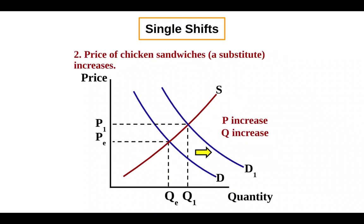The second example I'm going to give here is the price of chicken sandwiches, a substitute, increases. So again, we start with our original price and quantity at equilibrium. And then because chicken sandwiches are more expensive, I'm going to stick with hamburgers. That's going to increase my demand for hamburgers, resulting in a higher price and a higher quantity.